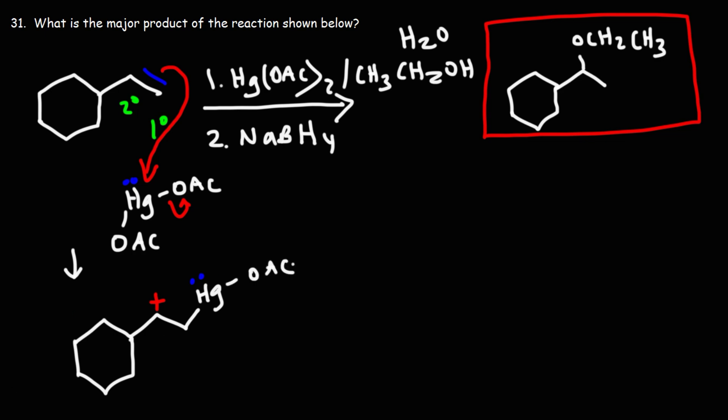The reason being is we can draw a resonance structure where this lone pair could connect with the carbocation, giving us a more stable mercurinium intermediate. So this is the mercurinium ion. Now the mercury bears the positive charge as opposed to the carbon, and so that's why we don't really see much carbocation rearrangement with this reaction.